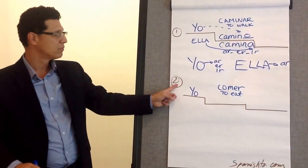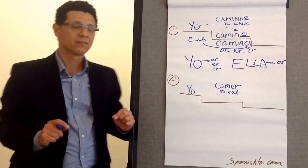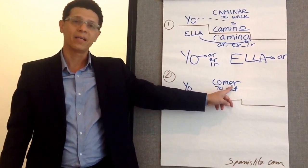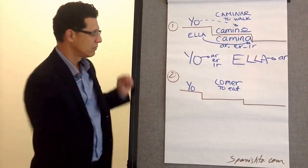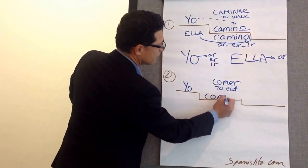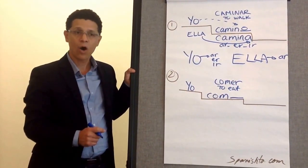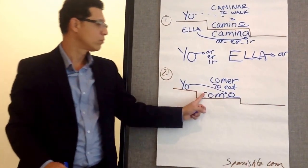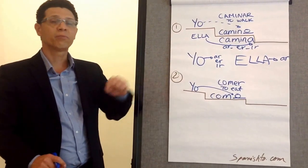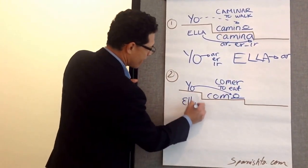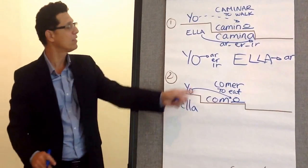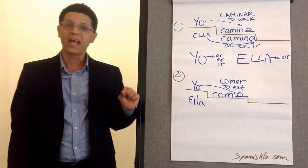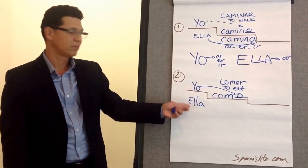So let's do one more example. We have the verb comer — it means to eat. How do we say 'I eat'? Well, you take away the ending from comer, E-R, and you're left with the base. The ending for yo will be O, so yo como. For ella — we learned it was A for A-R verbs — but for an E-R verb it's not an A. However, the answer is still in the question: it's the letter E.